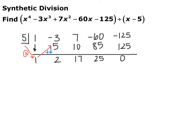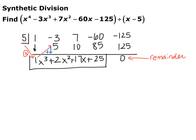Add those two together: negative 3 plus 5 is 2. Then repeat the process: 5 times 2 is 10, add down to get 17, and so on. You should notice these are the same coefficients we ended up with in polynomial division. Since the original was x to the 4th, we go one degree less — so this starts as x cubed plus 2x squared plus 17x plus 25. That last value on the end, in our case 0, is your remainder.